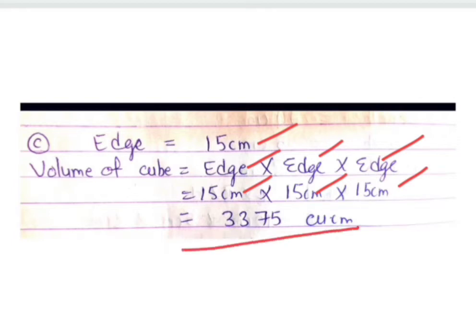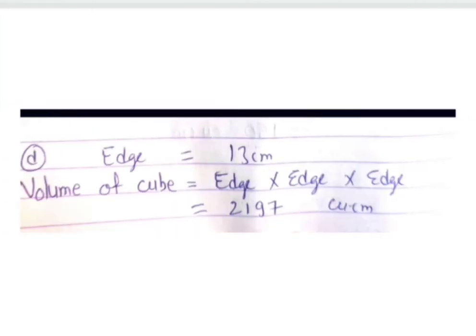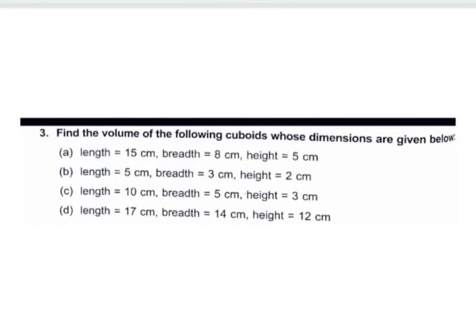The answer for part C is 3375 cubic centimeters. In part D, the edge is 13 centimeters. Volume of the cube is edge × edge × edge, so 13 × 13 × 13 = 2197 cubic centimeters. Note: don't forget to write the unit — 13 centimeters — which you can add yourself.